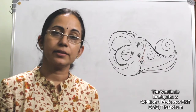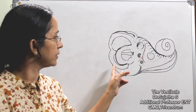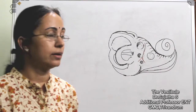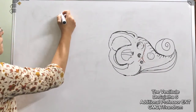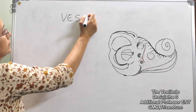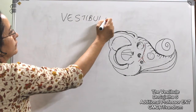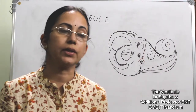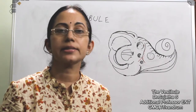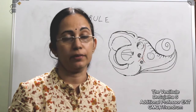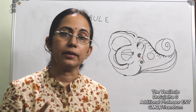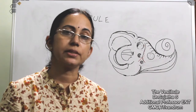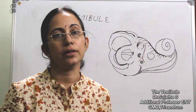The inner ear contains three structures: the vestibule, cochlea, and the semicircular canal. Today we will discuss the vestibule. The development of the inner ear starts by the third week of intrauterine life and is complete by 16 to 25 weeks. That is why infections of the mother in the first trimester will cause deformities or developmental abnormalities of the inner ear.